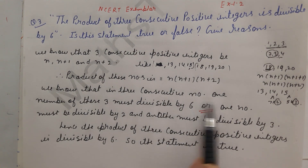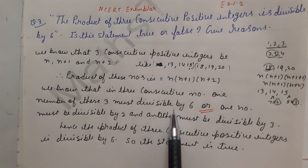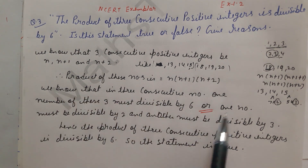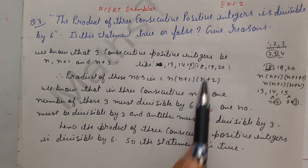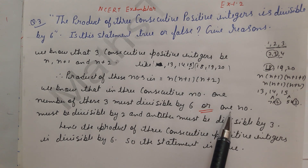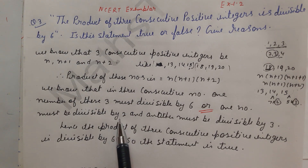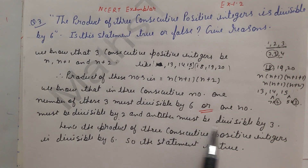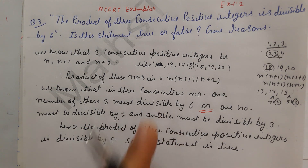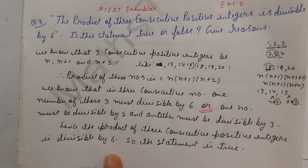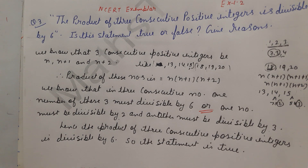So I have put two conditions. In 3 consecutive numbers, if one number is divisible by 3 and another is divisible by 2, then together they make 6. Hence, the product of 3 consecutive positive integers is always divisible by 6. So the statement is TRUE.